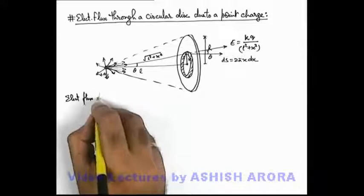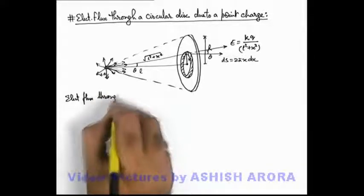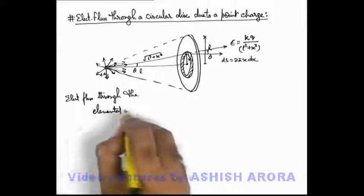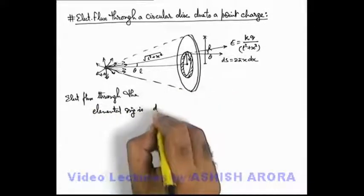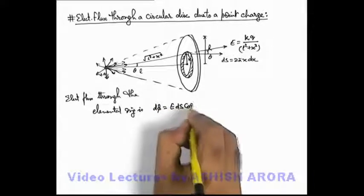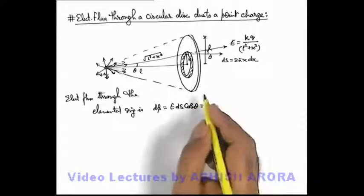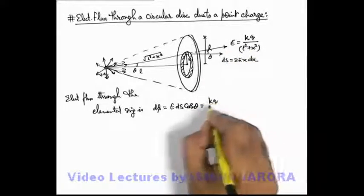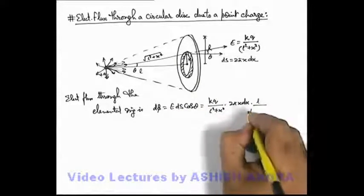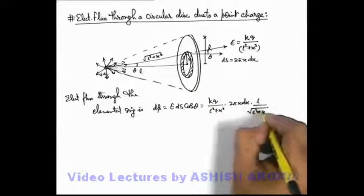Electric flux through the elemental ring is e dot ds or which can be written as e ds cos theta. If we substitute the values, electric field is kq by l square plus x square, ds is 2πx dx, and the value of cos theta we can substitute from this triangle as l by root of l square plus x square.